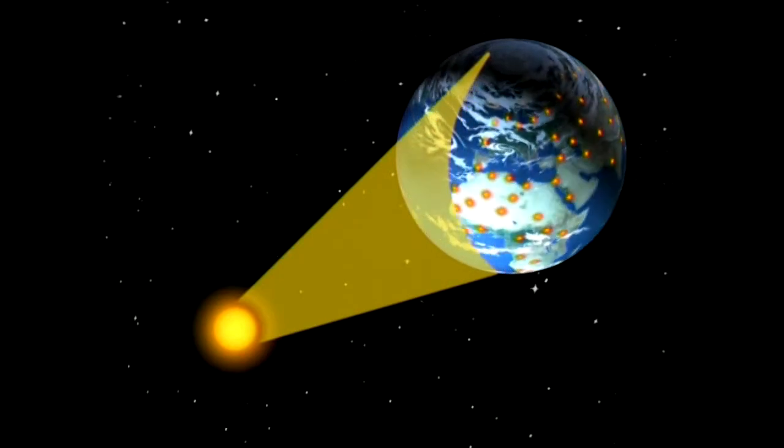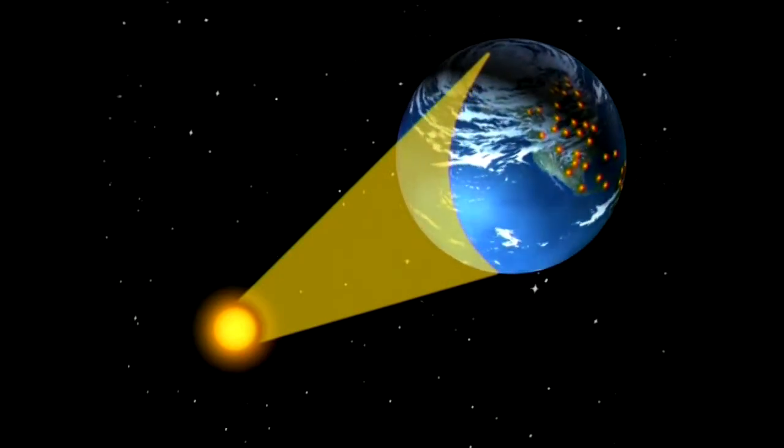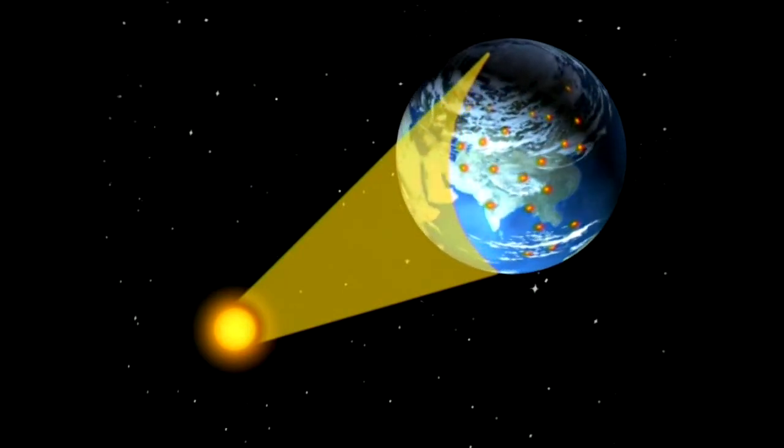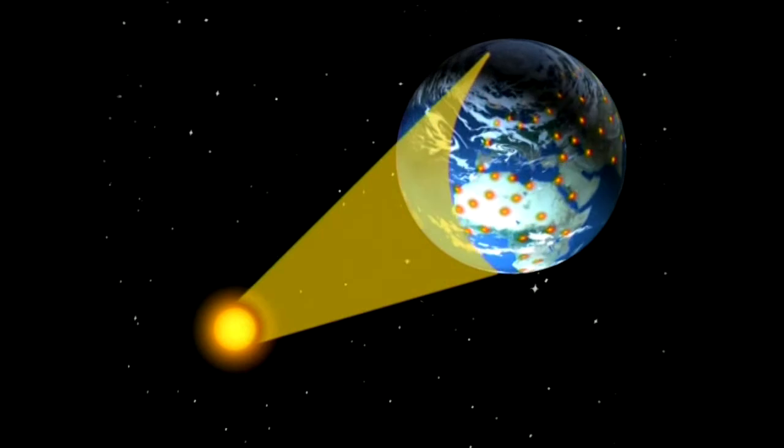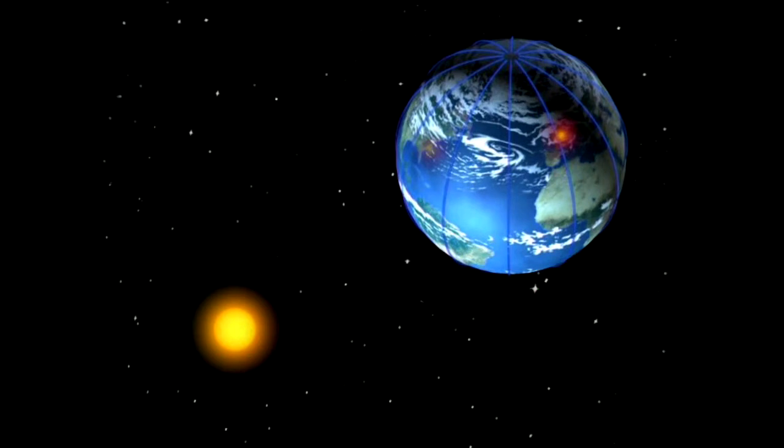Each minute, another city, another country turns to face the Sun. Each city, each country has a different local time. With the appearance of the telegraph and the telephone, a universal system was needed, and the Earth was divided into 24 time zones.